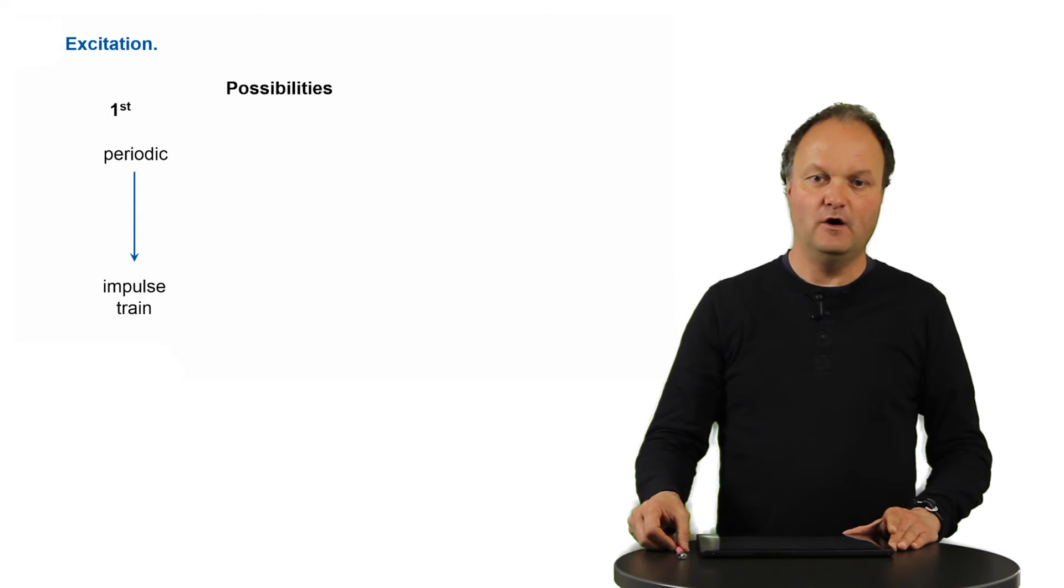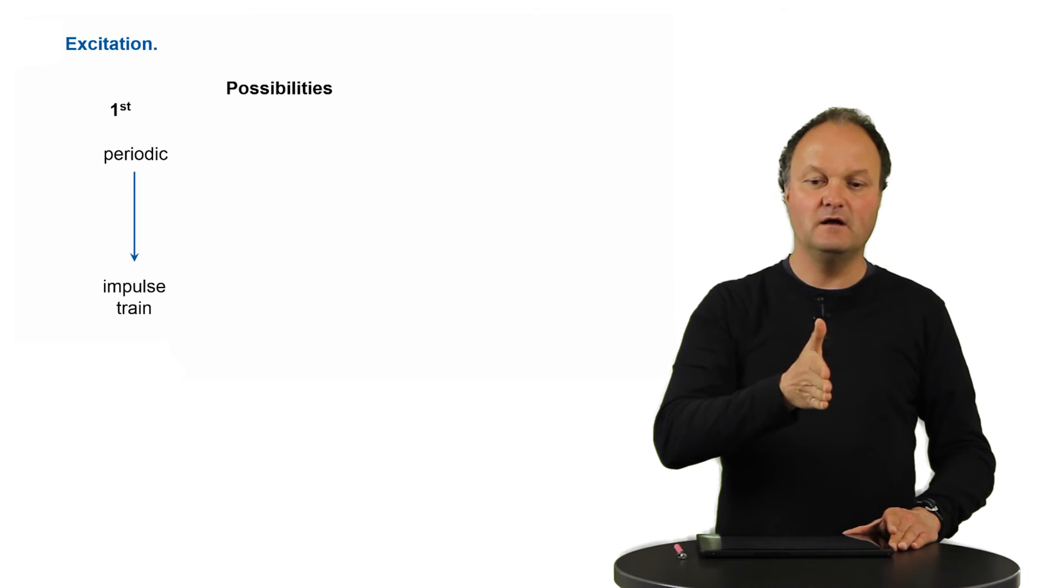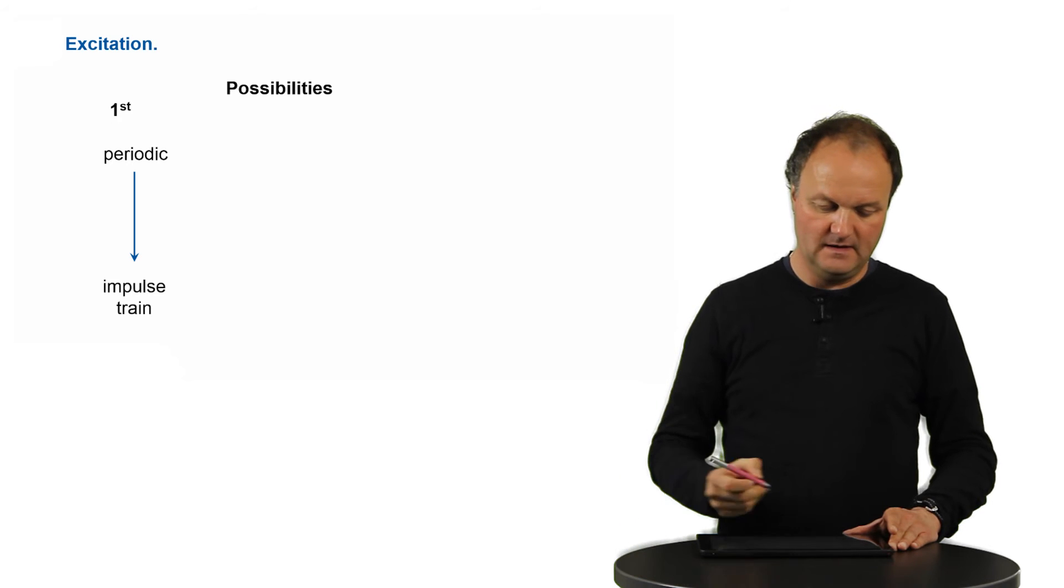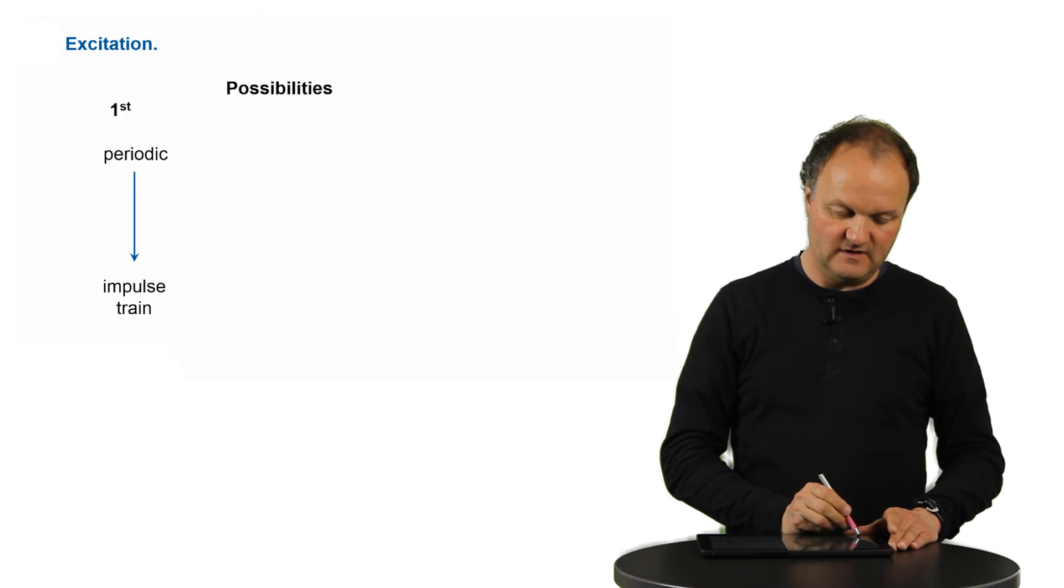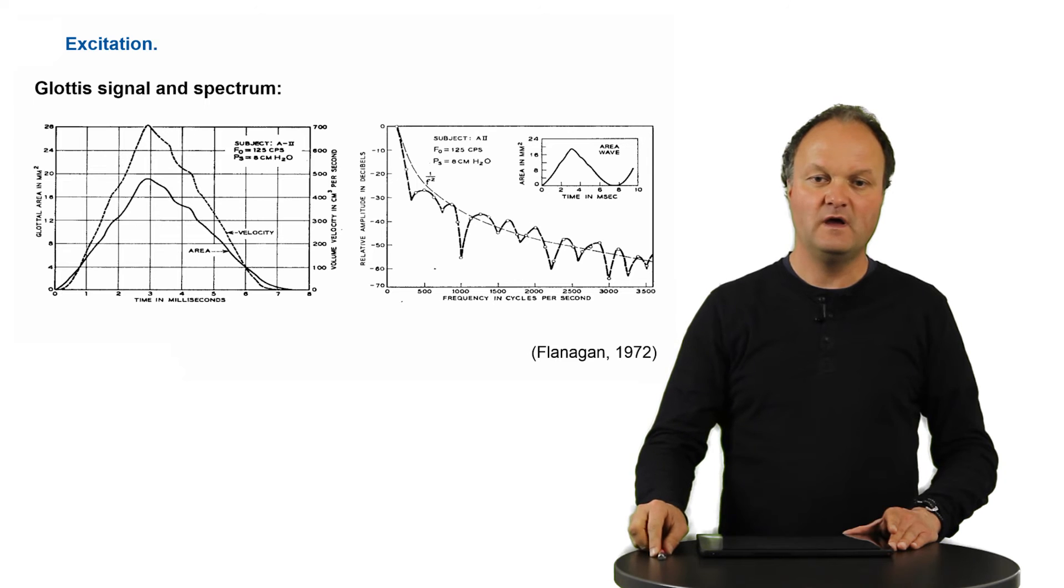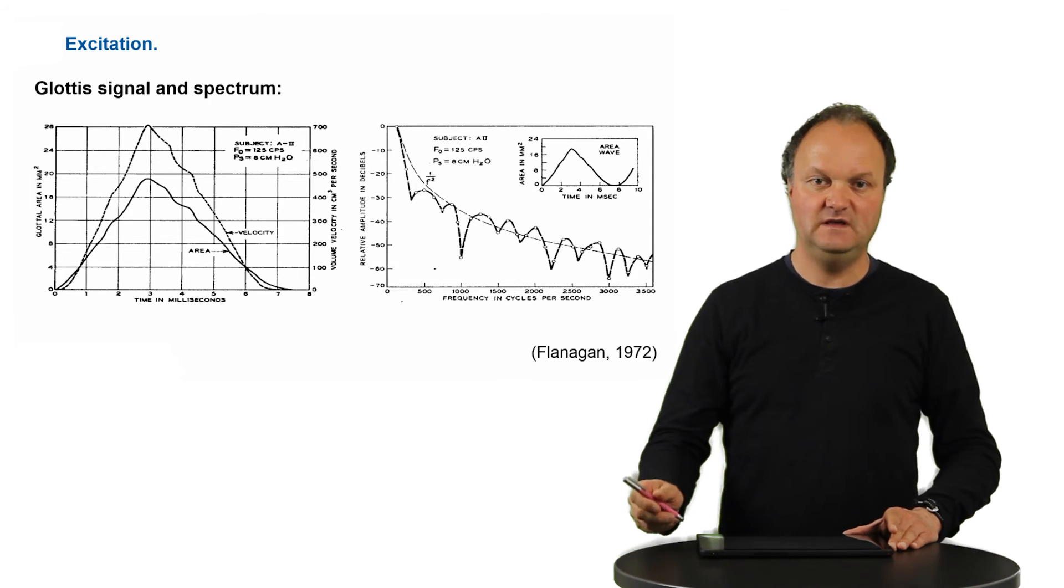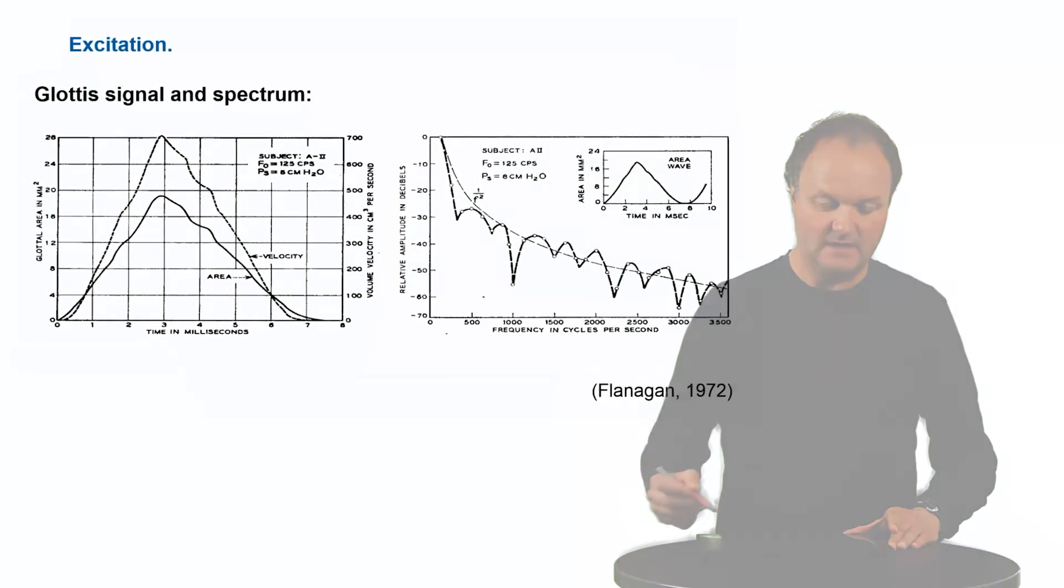Mathematically, this opening and closing can be described by an impulse train, that is a sharp opening and closing process which is repeated with a fundamental frequency. This is an ideal situation. In reality, we will have a more triangular shaped excitation signal which you see on the left panel in the picture behind me.